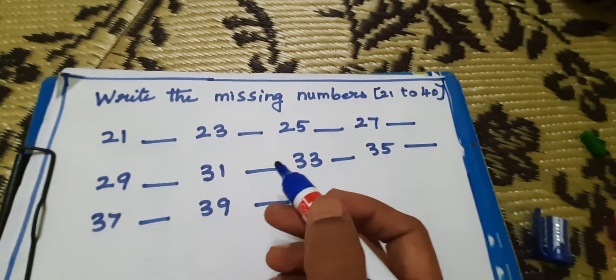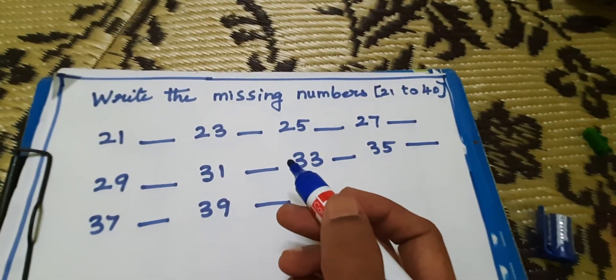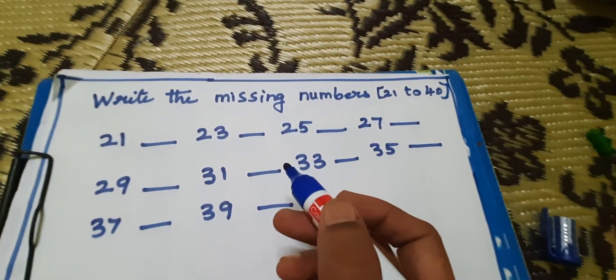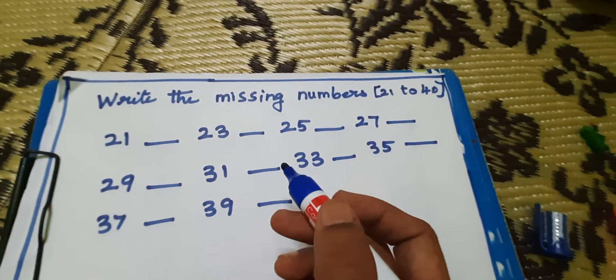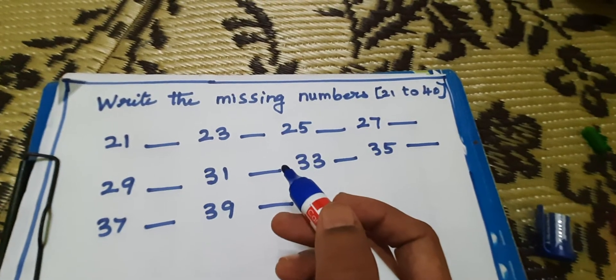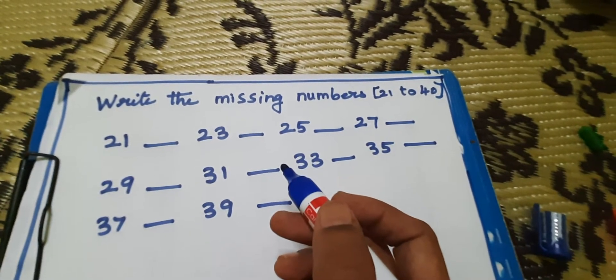Hi kids! Write the missing numbers. 21 to 40.